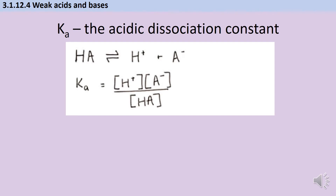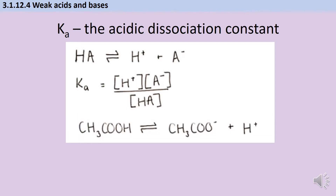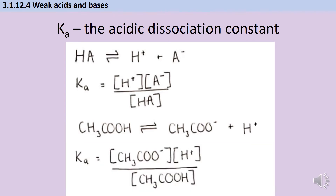The A in the expression can be any anion. For instance, if we look at ethanoic acid, which splits up to make an ethanoate ion and a hydrogen ion, we can represent this with a Ka expression. This will allow us to do calculations and work out what the pH of a weak acid will be when it dissolves.